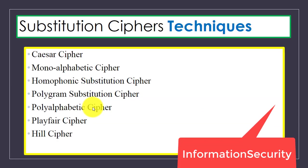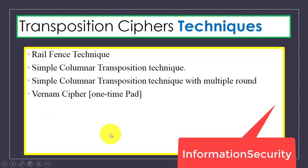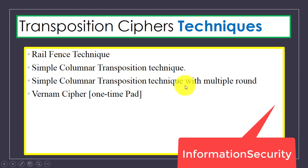We have some substitution cipher techniques: Caesar cipher, monoalphabetic cipher, homophonic cipher, polygram, polyalphabetic, Playfair, and Hill cipher. For transposition cipher techniques, we have the rail fence technique, simple columnar transposition technique, and a technique with multiple rounds.